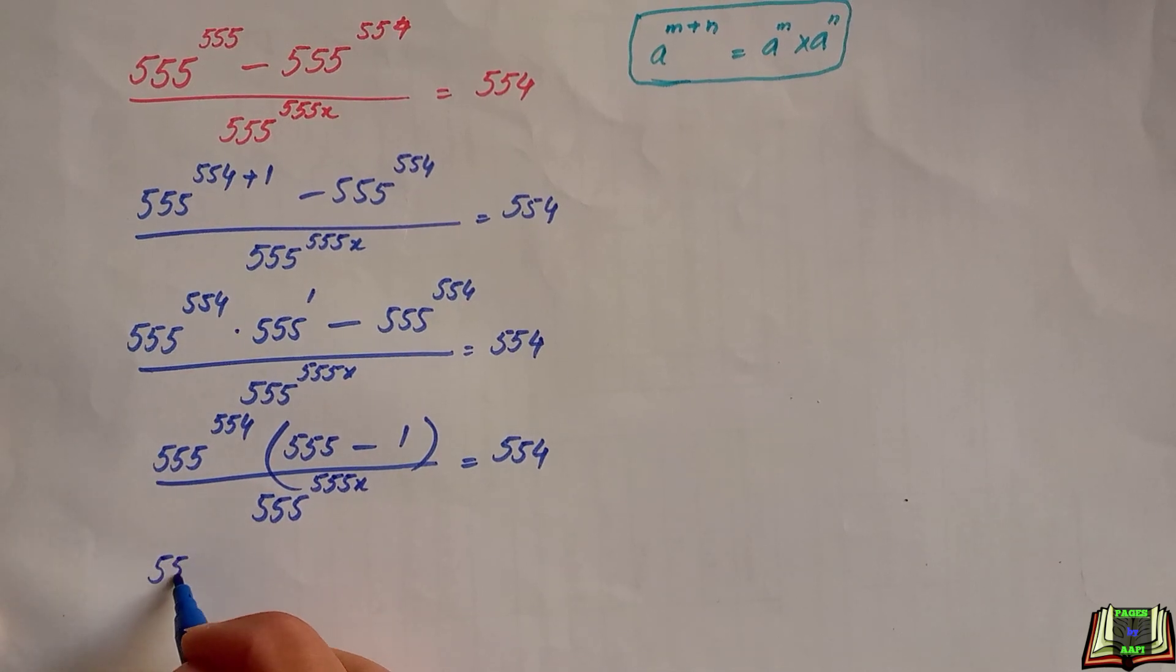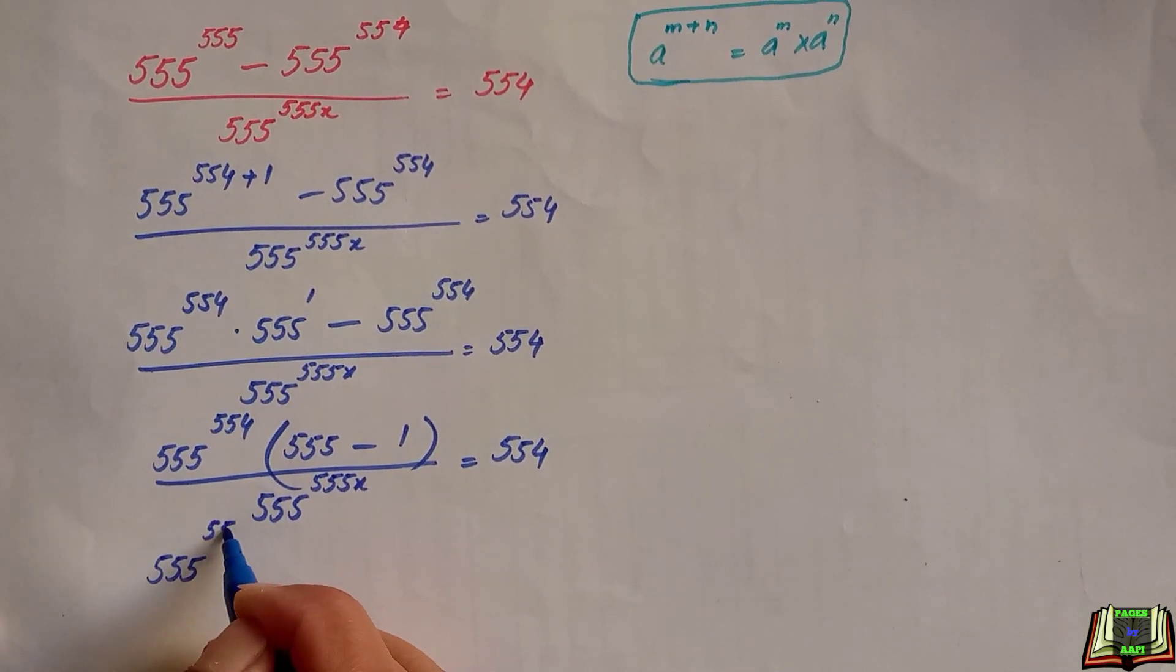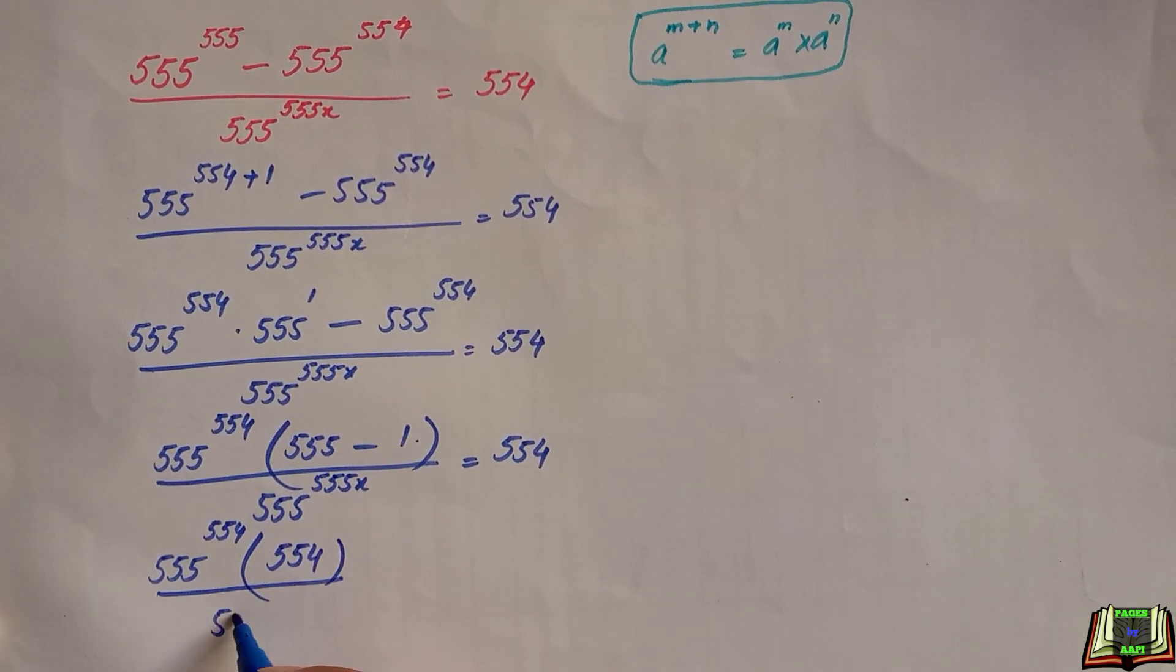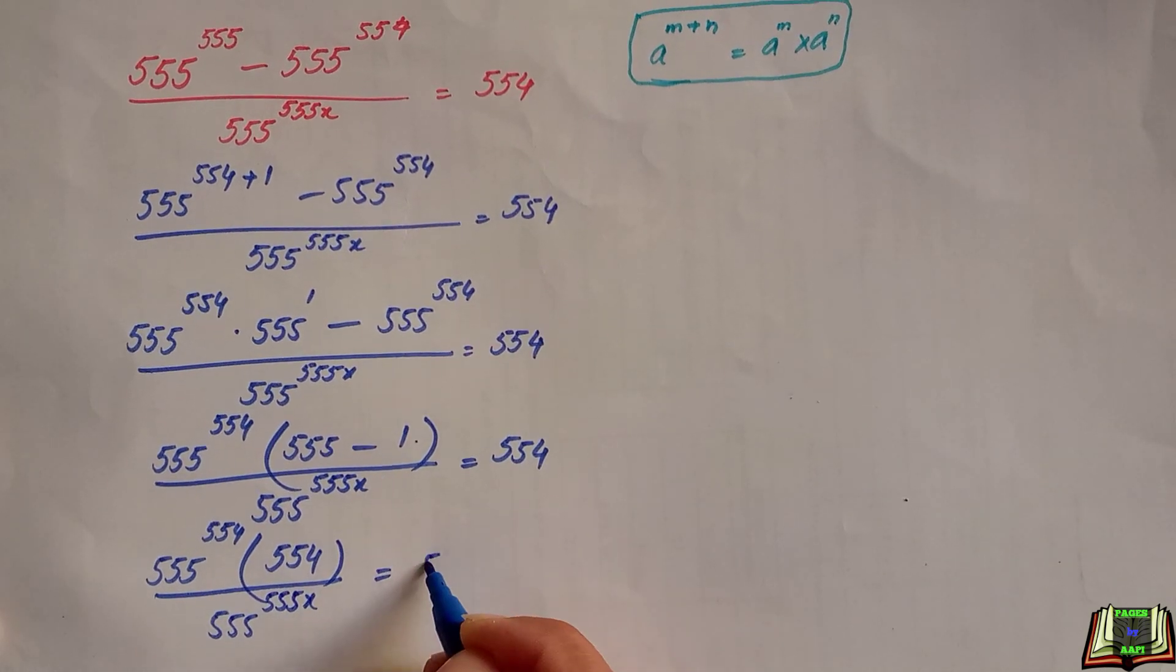We know that 555 minus 1 is equal to 554 divided by 555 raised to the power 555x is equal to 554.